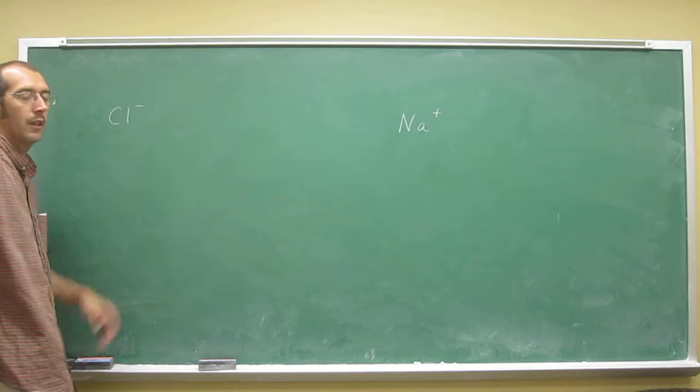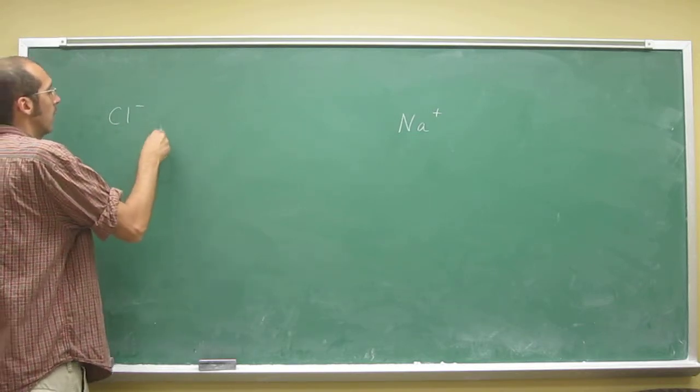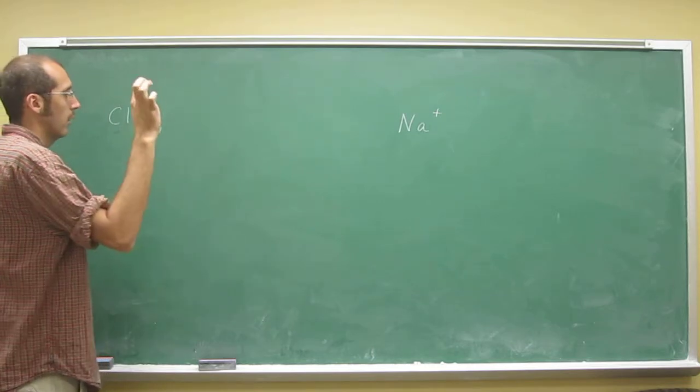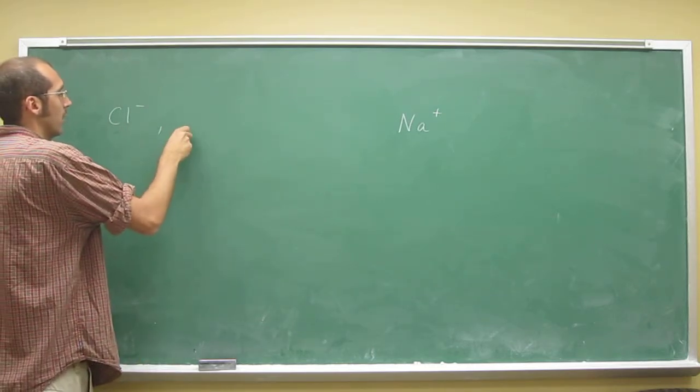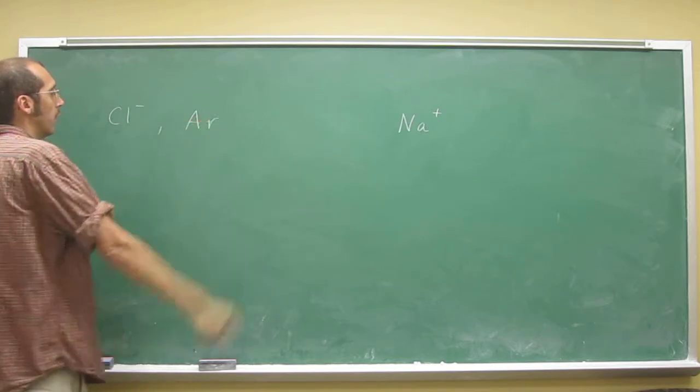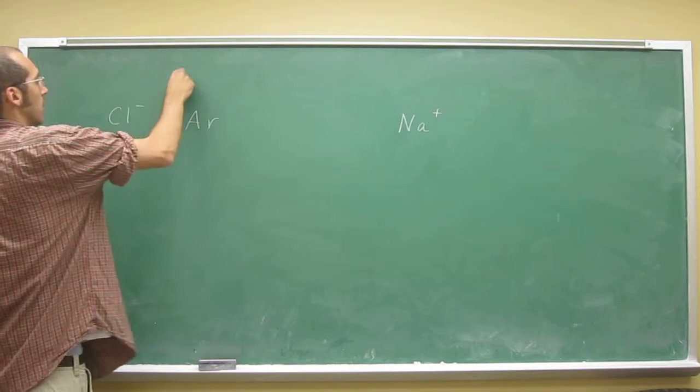Right? Because remember, all of these ions are trying to get an octet, so they want to get the noble gas configuration. In chlorine's case, the noble gas configuration is the argon electron configuration, so that's what it's isoelectronic to.